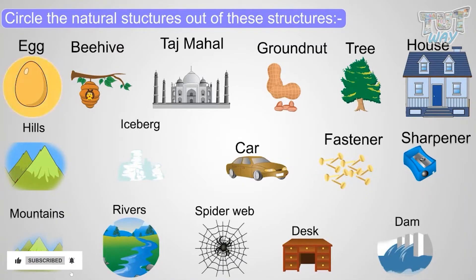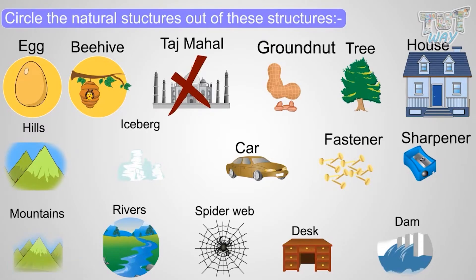Egg. Natural. Beehive. Natural. Taj Mahal. No, it's not a natural structure. It's a man-made structure. Groundnut. Natural. Tree. Natural.